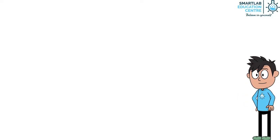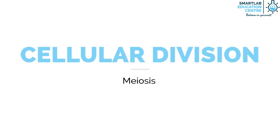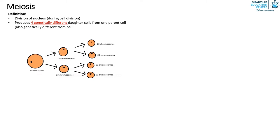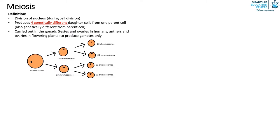Welcome back everyone. Today we learn about meiosis. Meiosis is defined as the division of the nucleus during cell division, which produces four genetically different daughter cells from one parent cell. It is carried out in the gonads — referring to the testes and ovaries in humans, and anthers and ovaries in flowering plants — to produce gametes only.